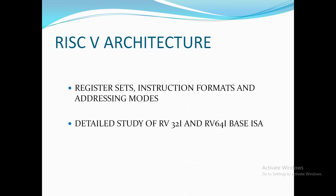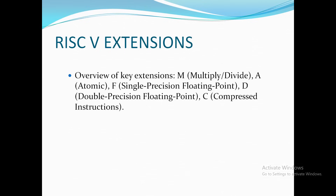In the RISC-V architecture we will be covering register sets, instruction formats, and addressing modes. We will be doing a detailed study of the RV32I instruction set and the RV64I base ISA, and if possible we will also discuss RV69. So we are going to see RV32I, RV64I, and if possible RV69, along with extensions in both RV32I and RV64I.